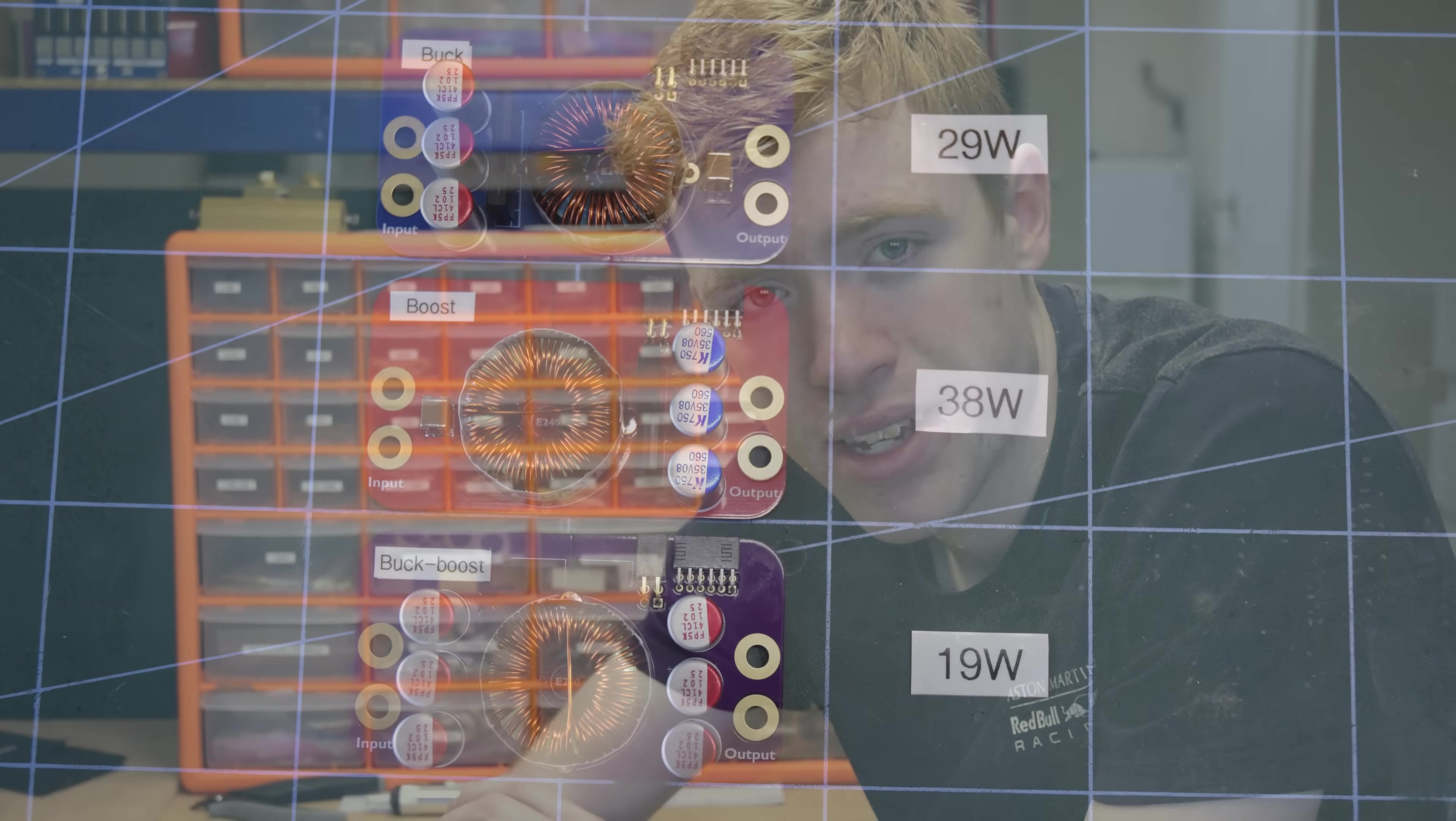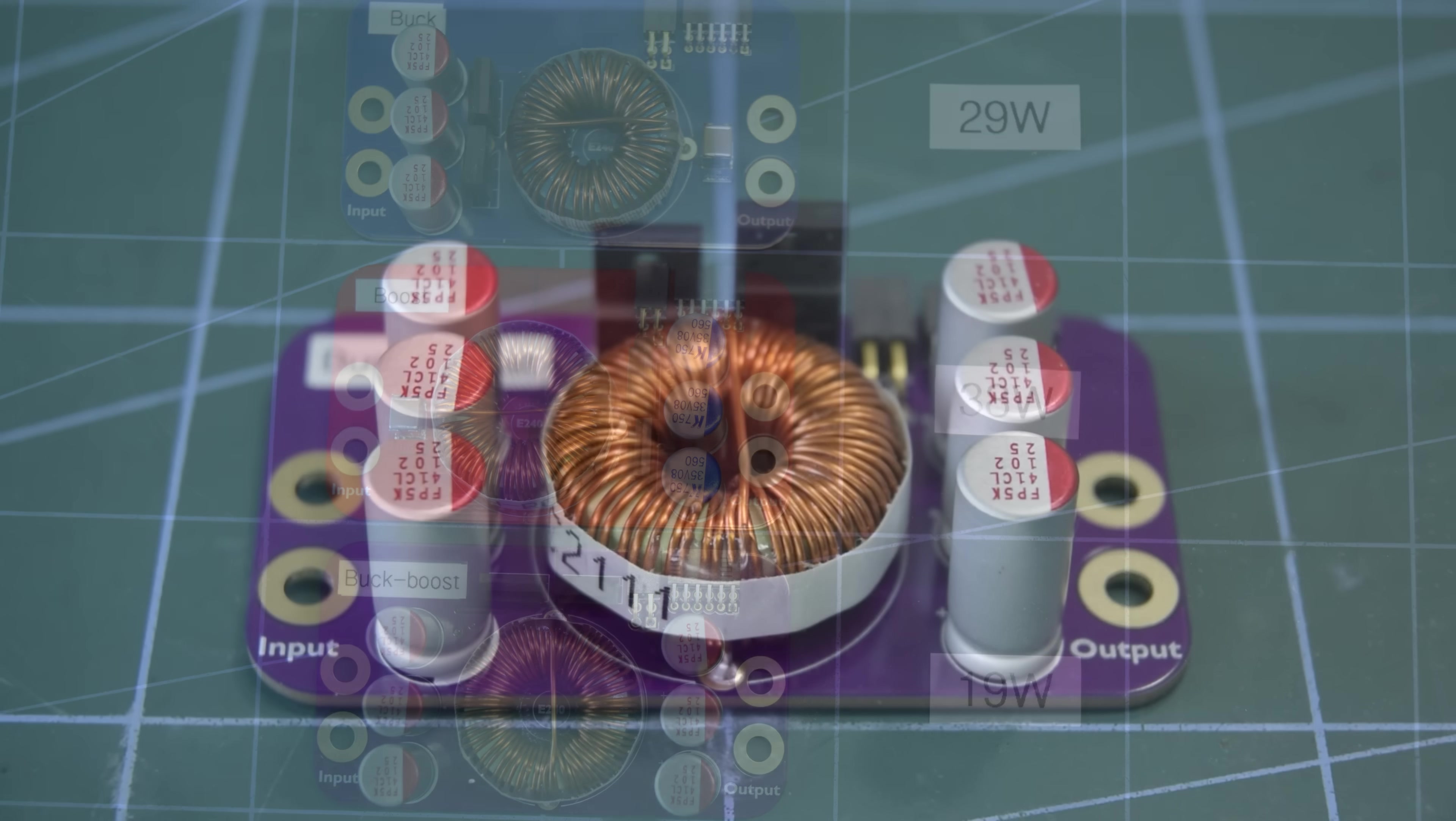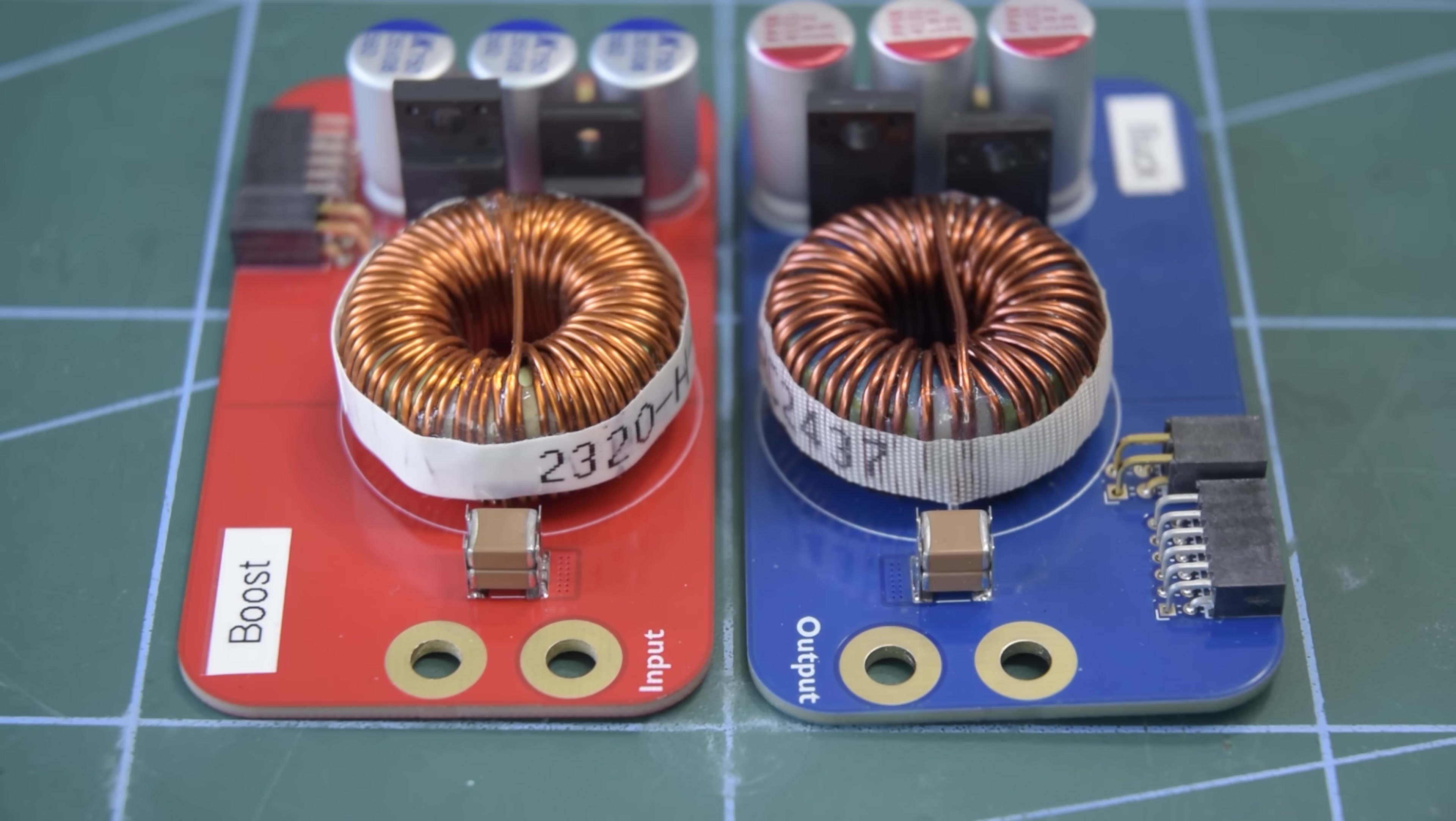This is one reason why buck-boost converters have lower power density than boost or buck converters, because they require large capacitors on both input and output because of the discontinuous current, whereas as you can see, boost and buck converters can get away with a small capacitor on input and output respectively.